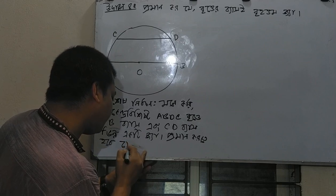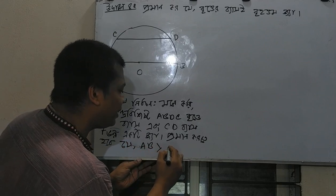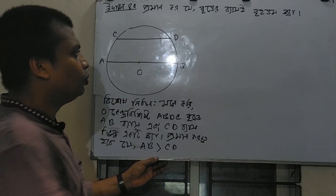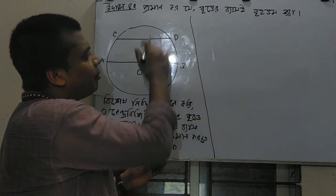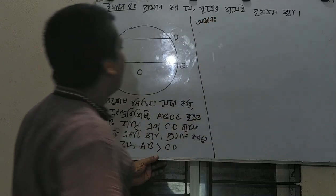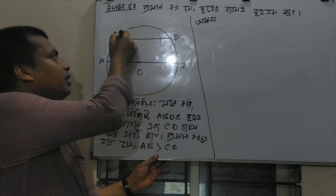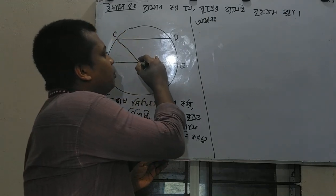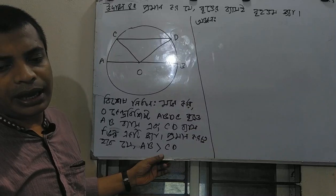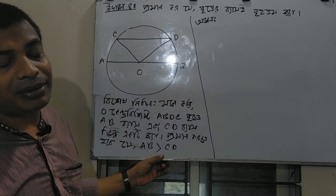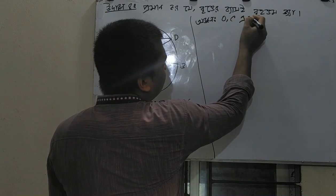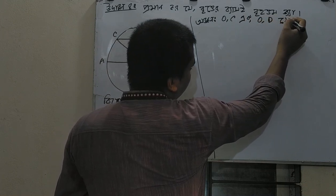When we start the algorithm, AB is greater than CD. When we start the algorithm, what is the value? The value is O,C and C,D.